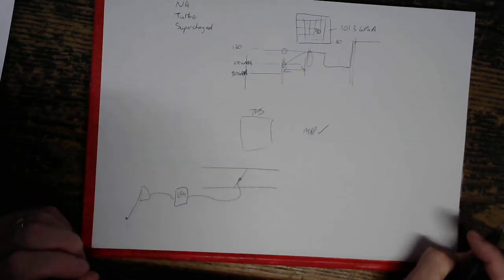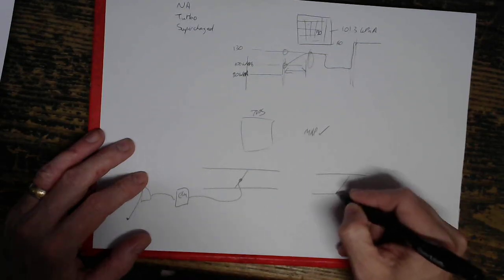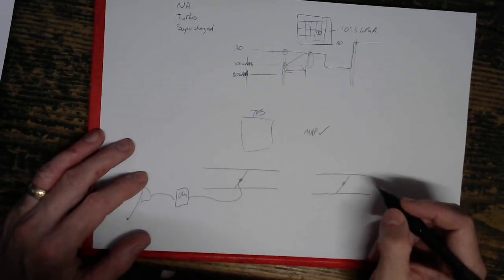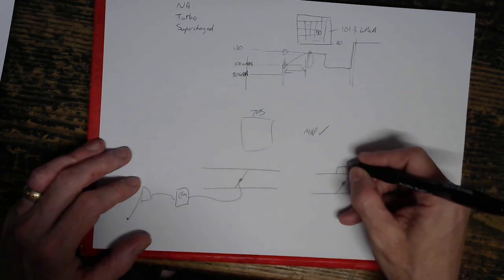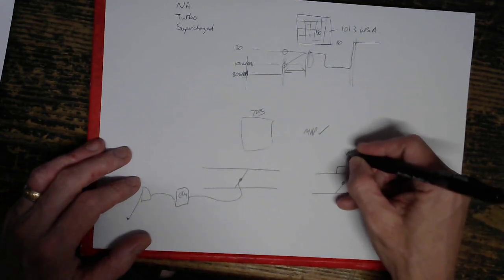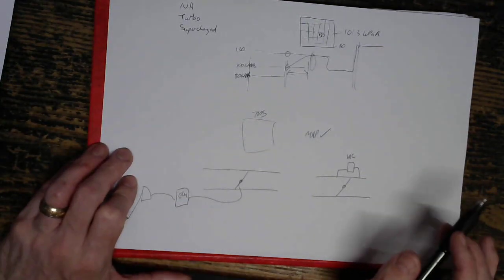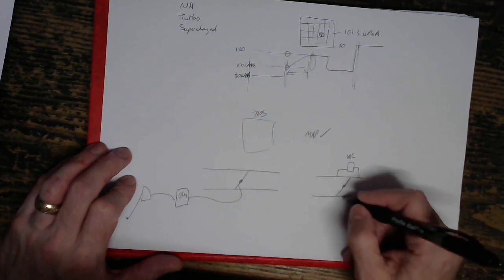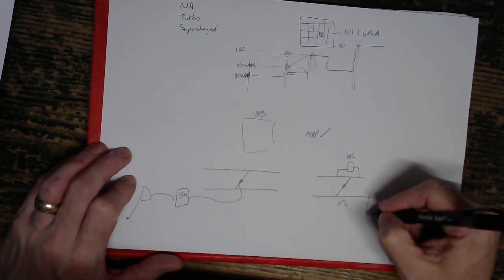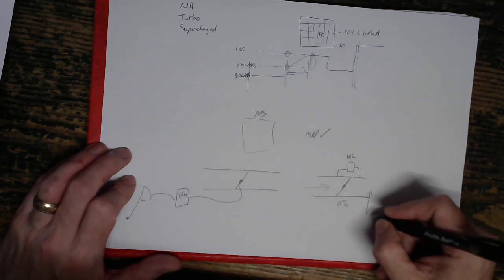One thing that might be confusing to him is if you've got a cable throttle, and you have a throttle bypass, like an idle control valve, or a warm-up reg, or a wax pellet, or something like that, then that's actually going to confuse you a little bit because the throttle position is going to be 0%, but the manifold pressure here is going up.